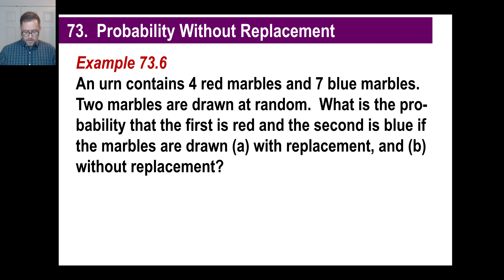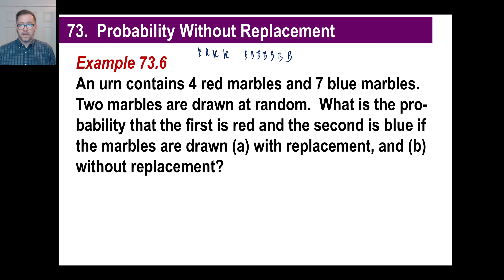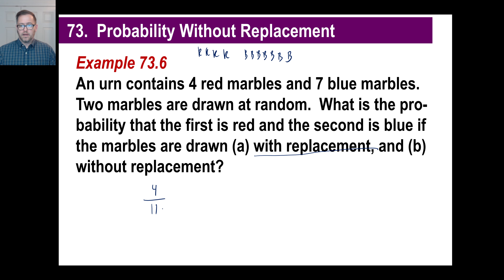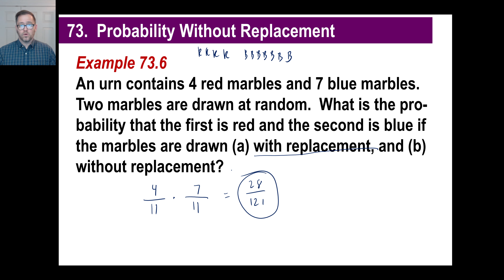Another example: an urn contains 4 red marbles and 7 blue marbles. Two marbles are drawn at random. What's the probability the first is red and the second is blue with replacement? The probability the first is red is 4 out of 11 (since 4 plus 7 is 11). We draw the red one, throw it back in, and mix it up. Now we still have 11 marbles, and the probability of drawing blue is 7 out of 11. So multiply 4/11 times 7/11 to get 28 out of 121. That's with replacement.